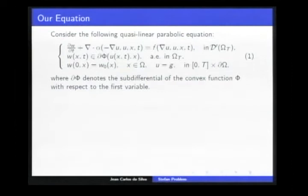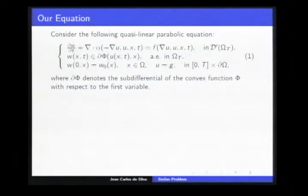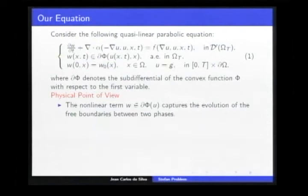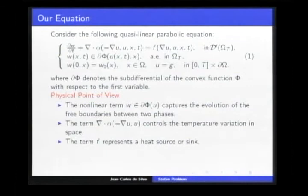I'll consider equations of the type where, in the time derivative, we have a measurable function that is in the graph of the derivative of a convex function with respect to the first variable, and in the diffusive term, we have a monotonous operator in the first argument. Physically, the relation graph represents the evolution of the free bond between two phases, and the diffusive term controls the temperature variation in space.